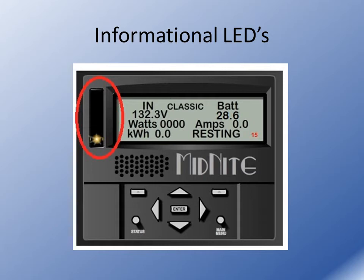Informational LEDs: the Classic has three LEDs on the left-hand side of the display. The bottom one is green, the middle one is yellow, and the top one is red. These LEDs can indicate different things depending on which LED mode the Classic is currently in. Please consult the manual for the different LED modes and what they would actually mean in each case.